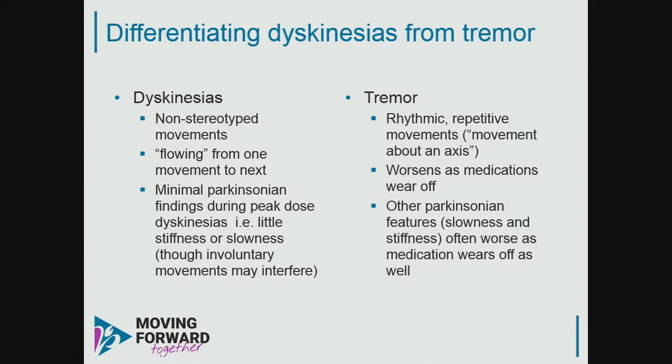Wearing off is when patients tell you the dose doesn't last as long. If it doesn't bother them, I acknowledge it but don't treat it. Dyskinesias — flowing, involuntary movements — are distinct from tremor, which is rhythmic and associated with worse Parkinsonian features. About half of people develop motor fluctuations within 4 to 6 years of treatment. The duration of illness and dose determines development of motor fluctuations, not the duration of therapy. So if you need it, take levodopa. For wearing off, take your dose sooner — moving from three to four times daily is manageable, though five times a day is more challenging.